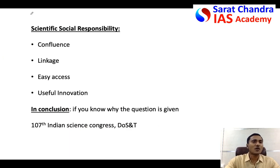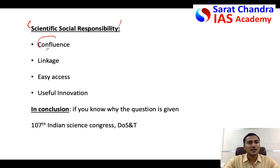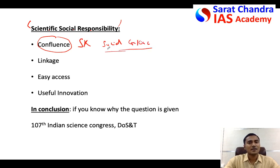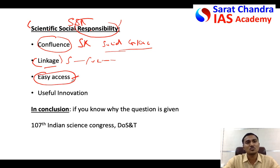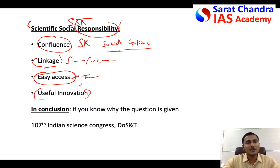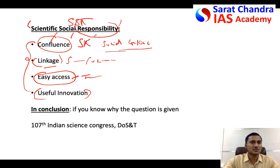Coming to the second part of the question - what is Scientific Social Responsibility? You can define it as a confluence of scientific knowledge with social concerns. It is a linkage between science and society. It is also the responsibility of scientists to make their research easily accessible through journalists or publishing, to ensure transparency, and to ensure that innovation is useful to society or at least not harmful to the public.